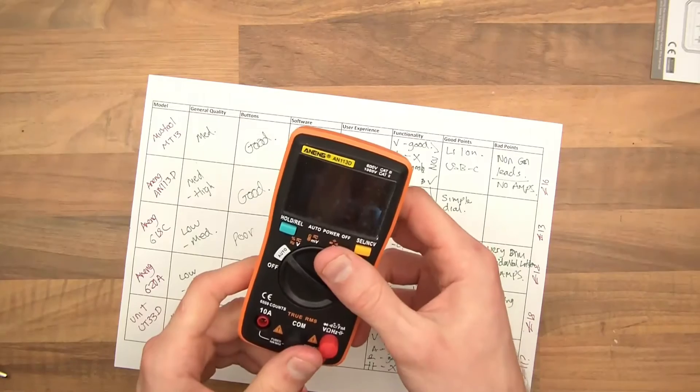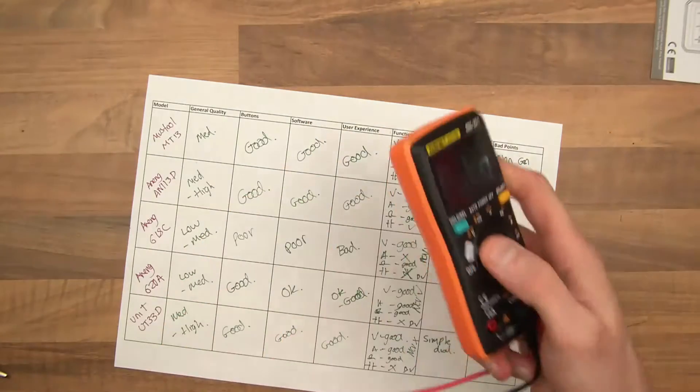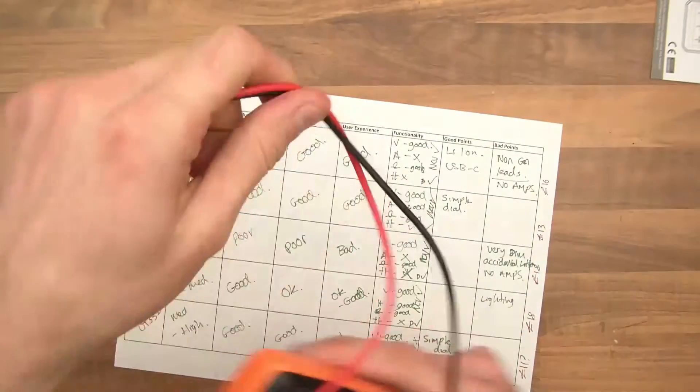So this is the Anang AN113D. It's £13. That's a really good multimeter for the price.